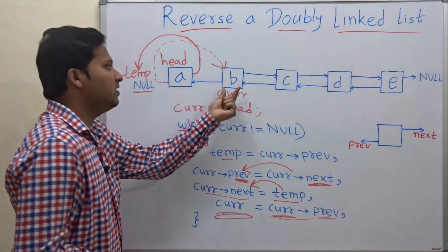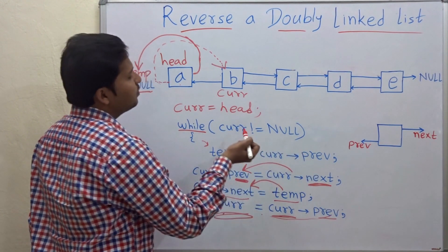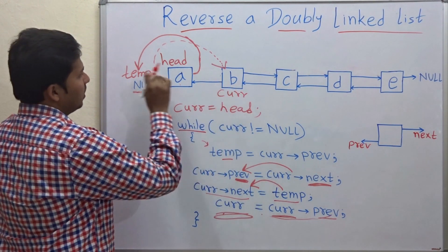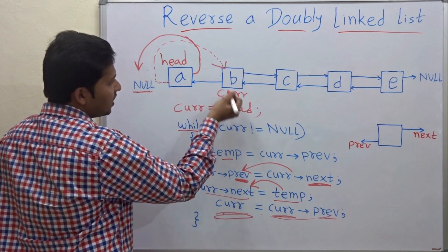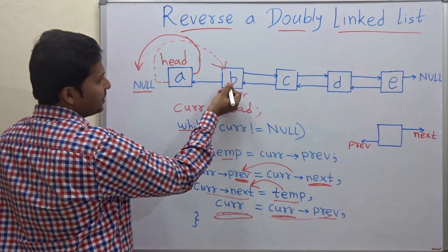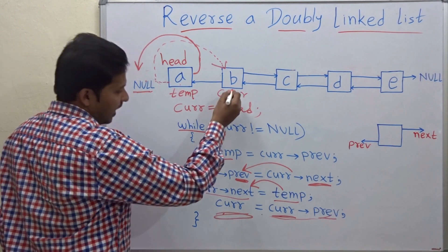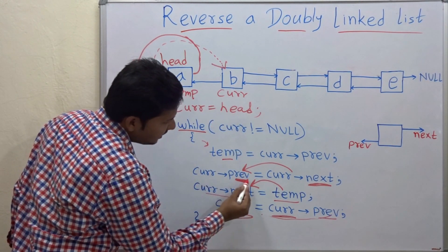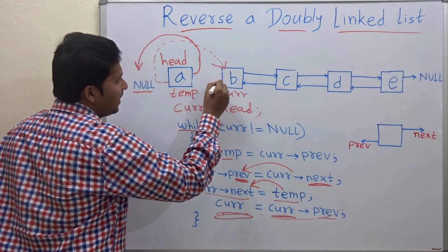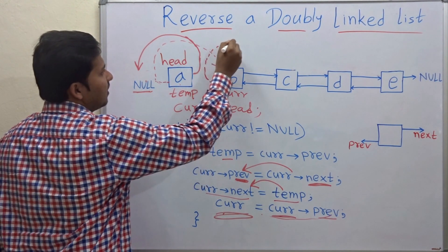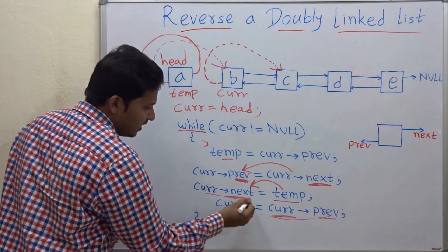Now let's repeat this procedure for node B. The first step is temp = current->previous, so temp will point to the previous node of current, which is node A. Then current->previous = current->next, so the previous link will point to the next node.